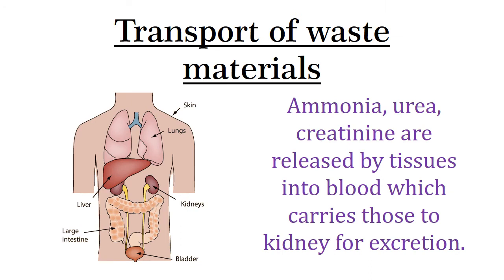The third function is transport of waste materials. Nitrogenous waste like ammonia, urea, and creatinine are released by tissues into blood, which carries them to the kidney for excretion. This is the third function of blood.